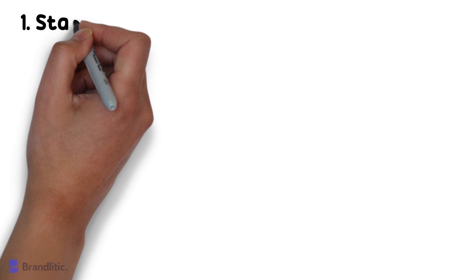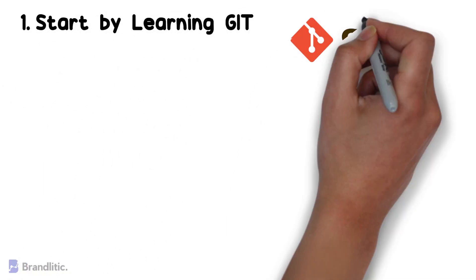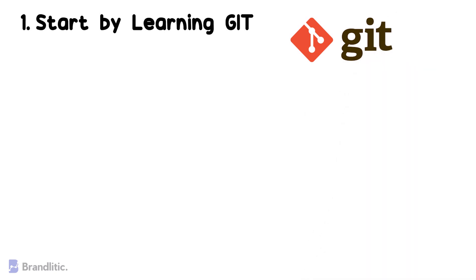Step 1: Start by learning Git. Git is one of the most widely used versioning systems in the IT industry. You don't need to be an expert at Git, but it is a technology that will accompany you throughout your DevOps journey, so be sure to learn it.